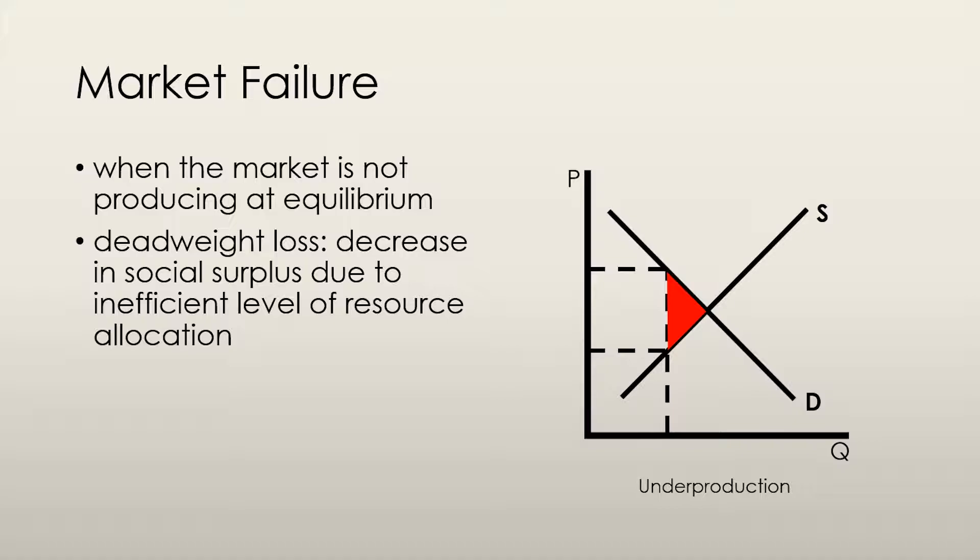Suppose that, for whatever reason, the market is underproducing the good in question, which means that the quantity supplied of the good is less than the equilibrium quantity. This drives the price up because buyers start to bid for the good, but it creates something known as deadweight loss. In essence, deadweight loss is a decrease in social surplus due to inefficient resource allocation. The red triangle represents the deadweight loss in this particular scenario.